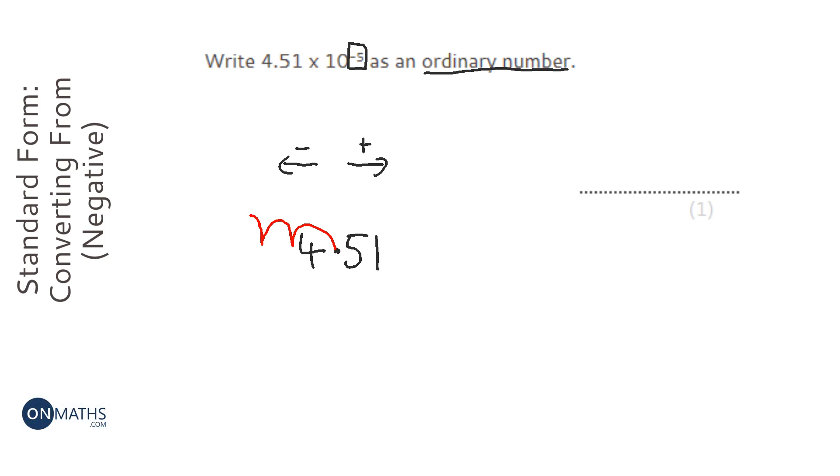1, 2, 3, 4, 5. So the decimal point is going to be here. Any jumps we did that weren't over numbers, we need to fill them in with zeros. You always start a decimal with 0 point, and that's our number.